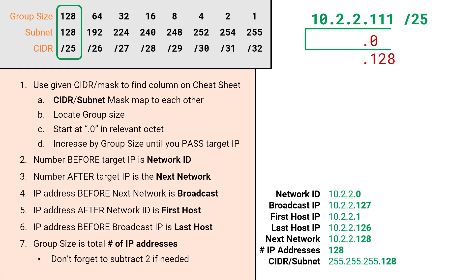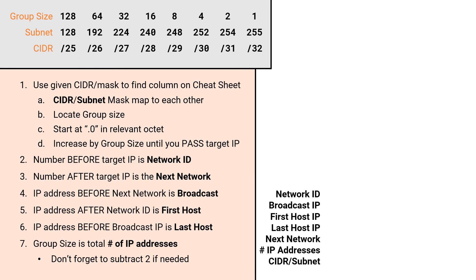And there you have two more examples of how to solve for all seven attributes of subnetting using the cheat sheet and these steps. Next, we're going to run through two more problems. These two problems will show you situations that, if not for us talking through them, could lead to confusion. Let's get to it.